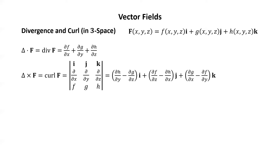The curl of F also has two notations: del cross F, or curl(F). Just like the cross product, there's a nice mnemonic device using a determinant. In the top row we have i, j, k. In the middle row we put the partial with respect to x, the partial with respect to y, and the partial with respect to z. On the bottom row we put the component functions little f, g, and h.